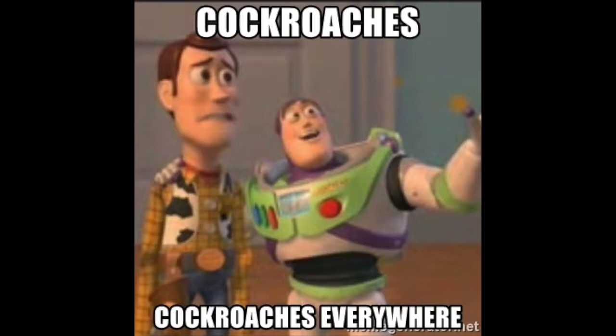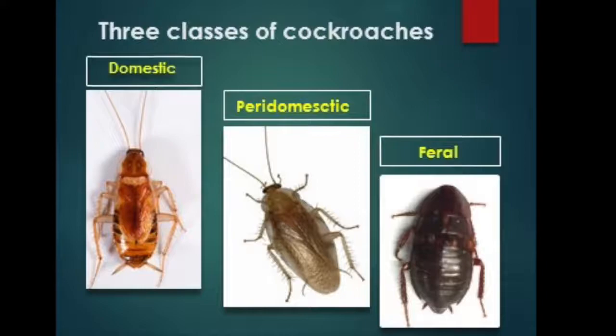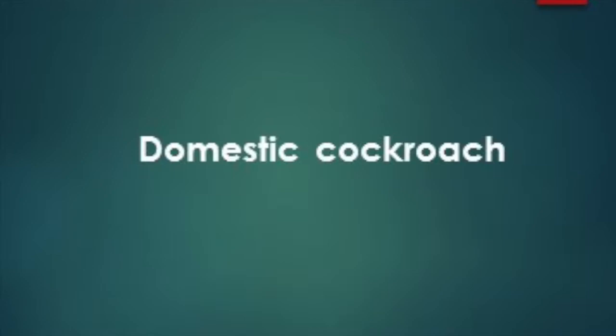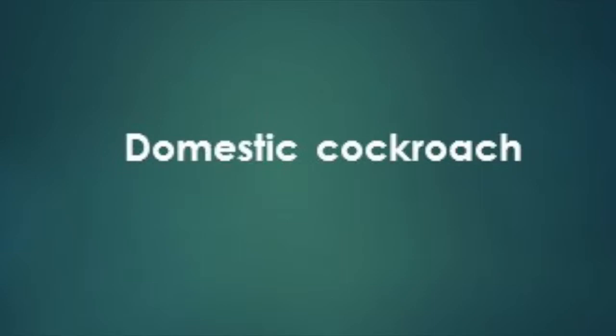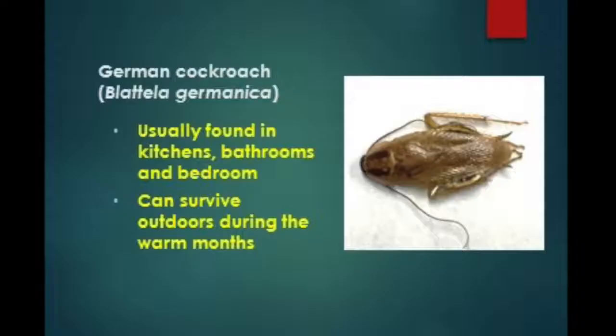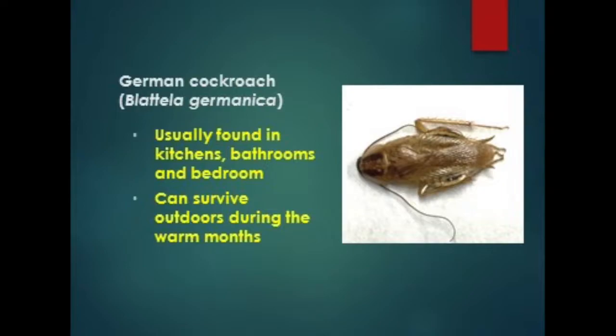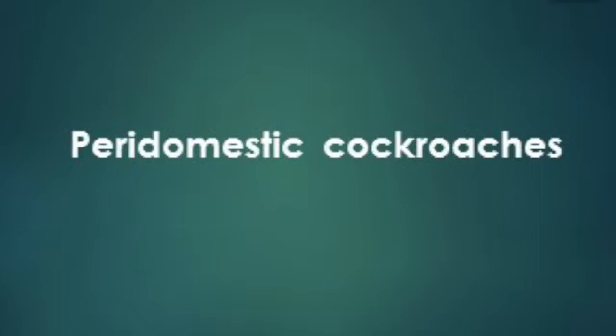Cockroaches can be found everywhere in terms of food preferences and living habitats. We can classify them ecologically in three classes: domestic, peridomestic, and feral. Cockroaches that live their entire life inside homes or buildings are considered domestic cockroaches. The German cockroach is a prime example, typically found in kitchens, bathrooms, and bedrooms, and can also survive outdoors during warm months.